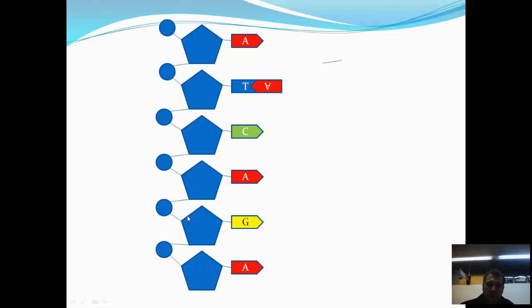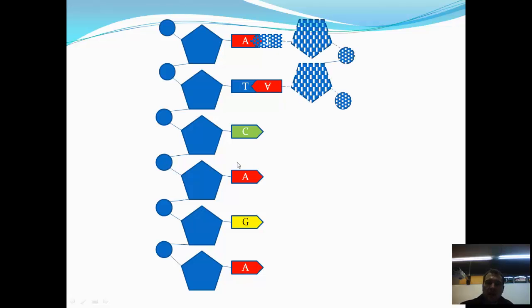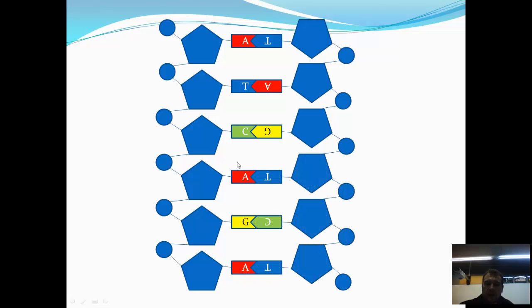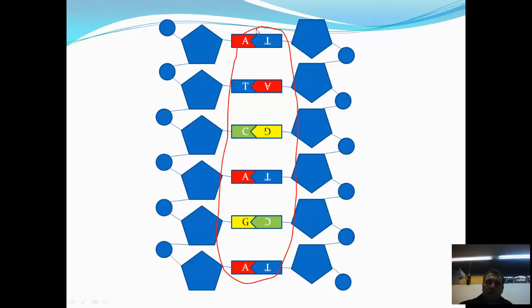DNA is actually double-stranded, so the other strand is bonded to this strand by what we call complementary base pairing, forming what look like rungs of a ladder, where an A always bonds to a T — adenine to thymine — and a guanine to a cytosine, or a G to a C. So what we end up with is a double strand of DNA with the rungs of the ladder formed from the base pairing of the nitrogenous bases, and the sides of the ladder formed from the sugar-phosphate backbone.